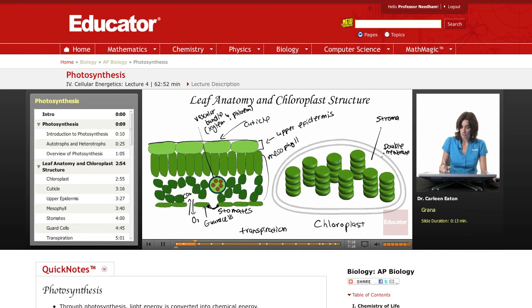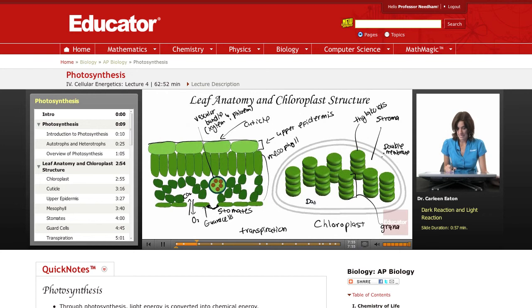So we have this double membrane, we have this fluid called stroma, and then we have these stacks of discs called grana. These discs, which are membranous, are called thylakoids. One thing in general to remember is that the dark reactions take place in the stroma, or the light-independent reactions, whereas the light reactions take place in the grana. The photosynthetic enzymes are embedded in the membranes of the thylakoid.